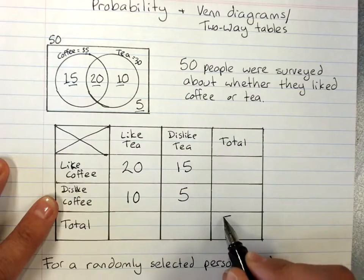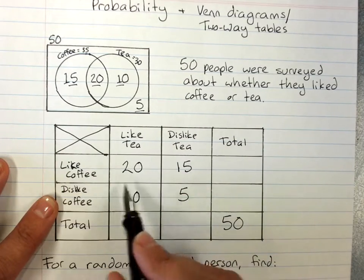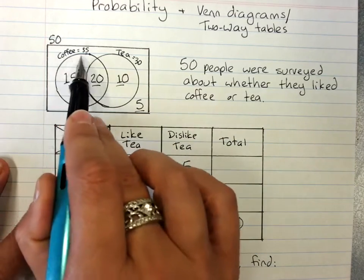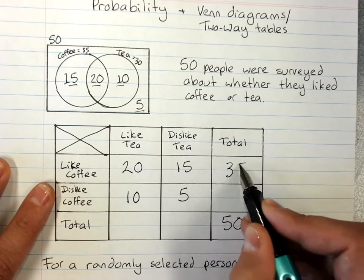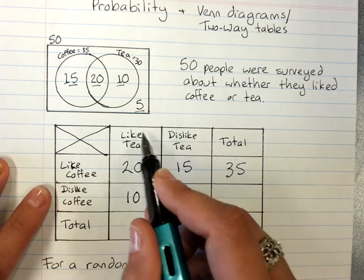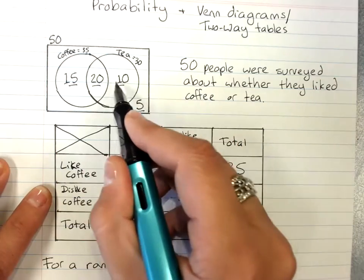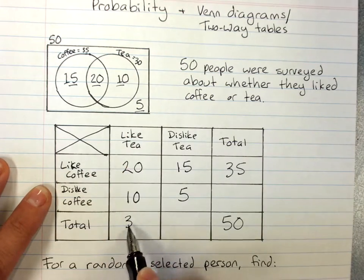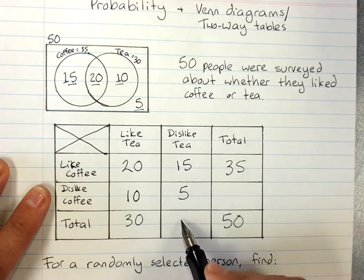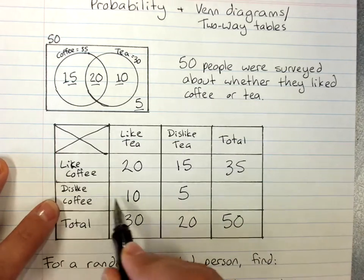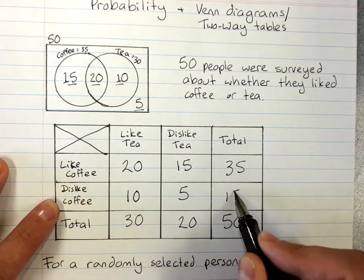We know the total has to come to 50 people, and we can get the totals. We should know that the coffee is 35: 20 plus 15 is 35. We should know that tea is 30: 20 plus 10 is 30. But we'll also get the total of people who dislike tea, 20, and the people who dislike coffee, 15.